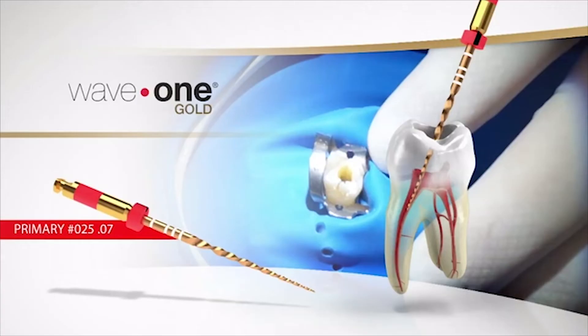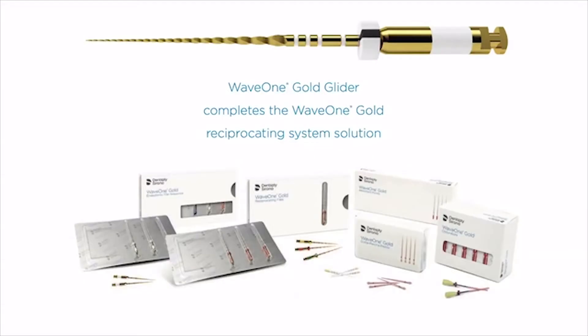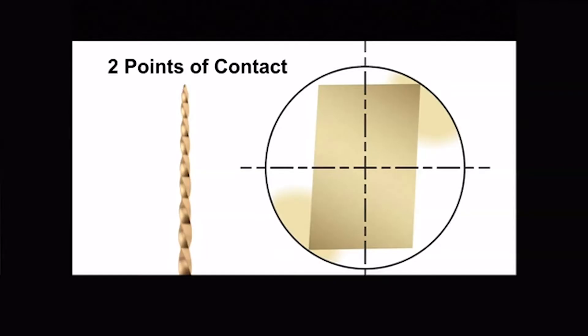My preference is the Wave 1 Gold. Dentsply Sirona makes different instruments for different practitioners — the three most popular engine-driven files are the Wave 1 Gold, the ProTaper Series, and Vortex Blue. The Wave 1 Gold system now includes its own glide path file, the Wave 1 Gold Glider, perfect for staying within the reciprocating motion. What is unique about the Wave 1 Gold? At any given time it never has more than two points of contact, making it less likely to engage and fracture if not hitting in many places at once.